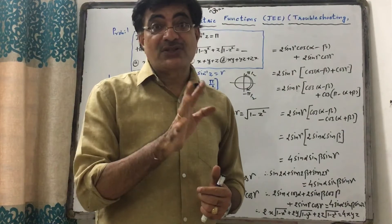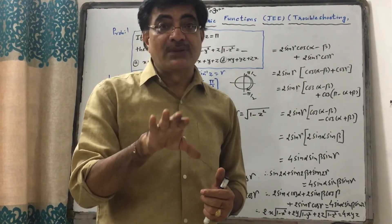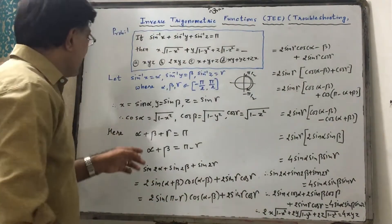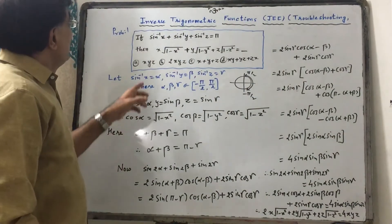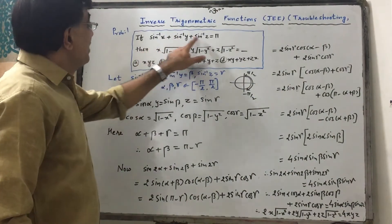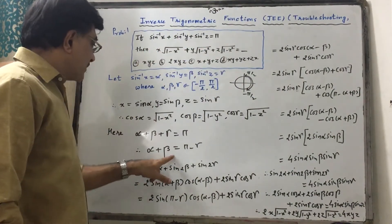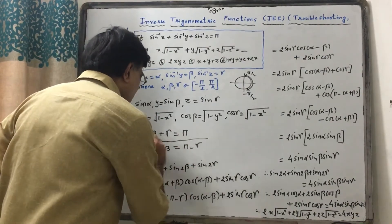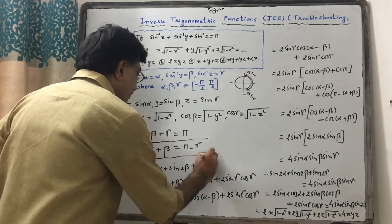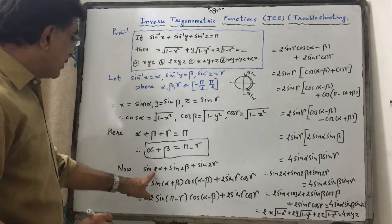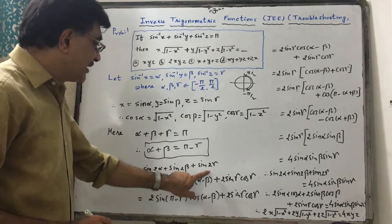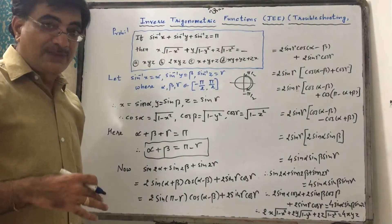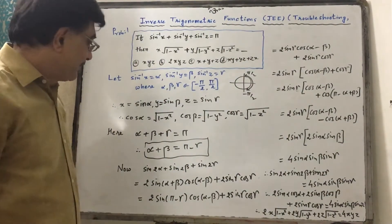Since α + β + γ = π, we have α + β = π − γ. This relation we will use going forward. Now for sin2α + sin2β + sin2γ, we need to simplify it.